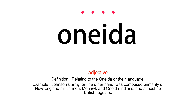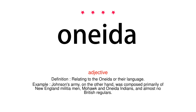Adjective. Definition. Relating to the Oneida or their language. Example. Johnson's army, on the other hand, was composed primarily of New England militiamen, Mohawk and Oneida Indians, and almost no British regulars.